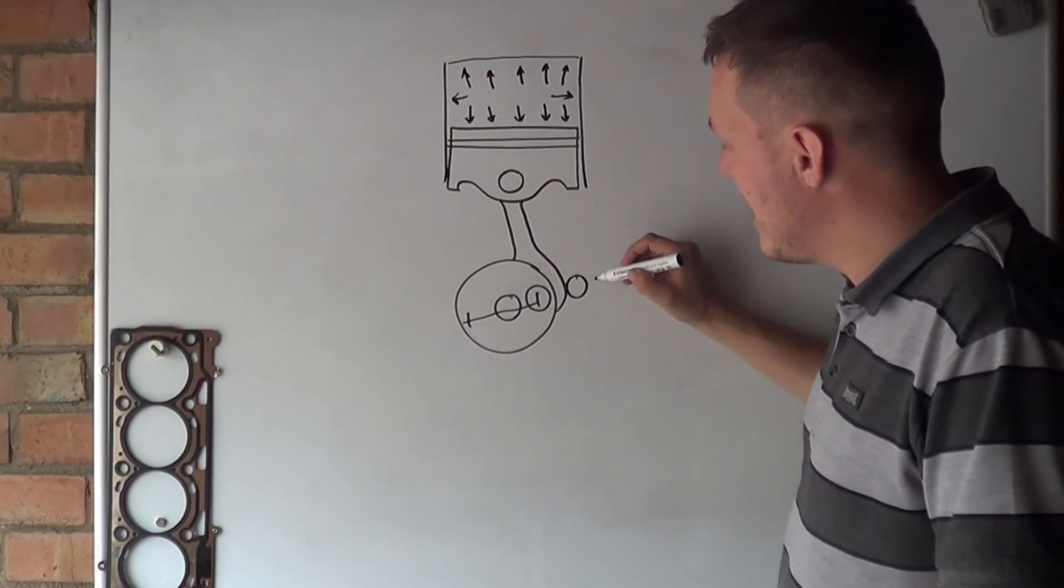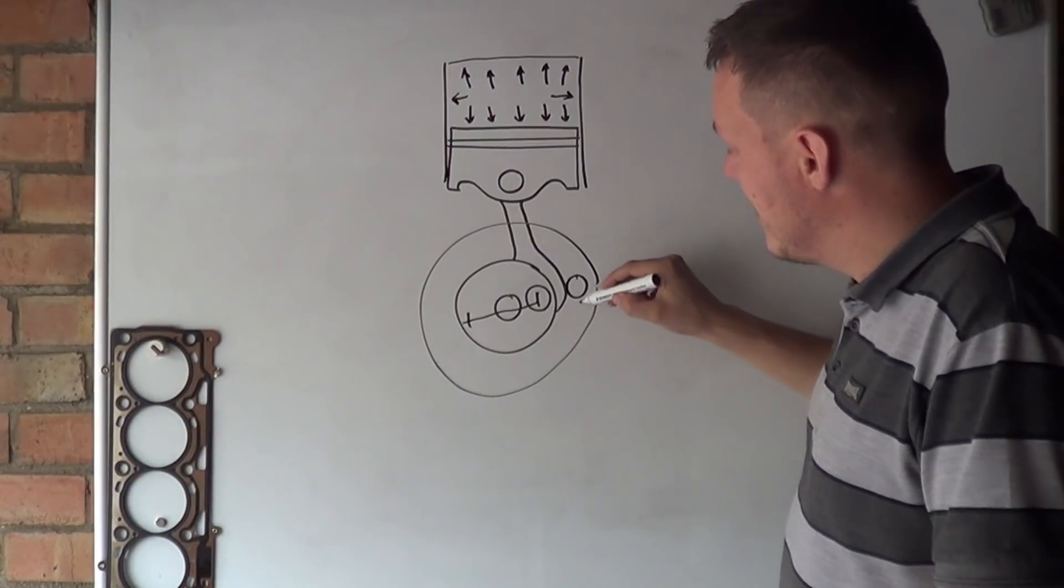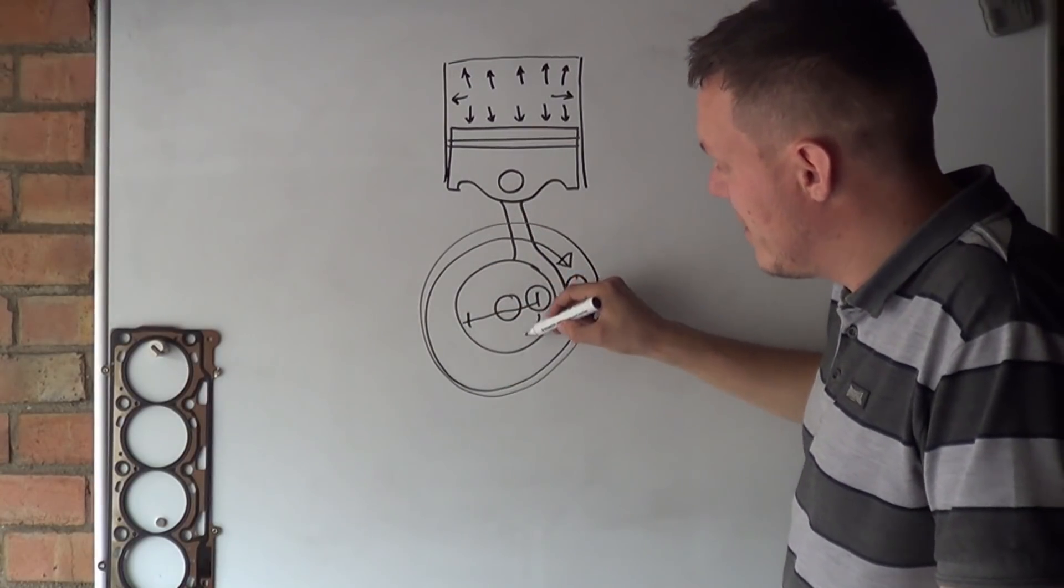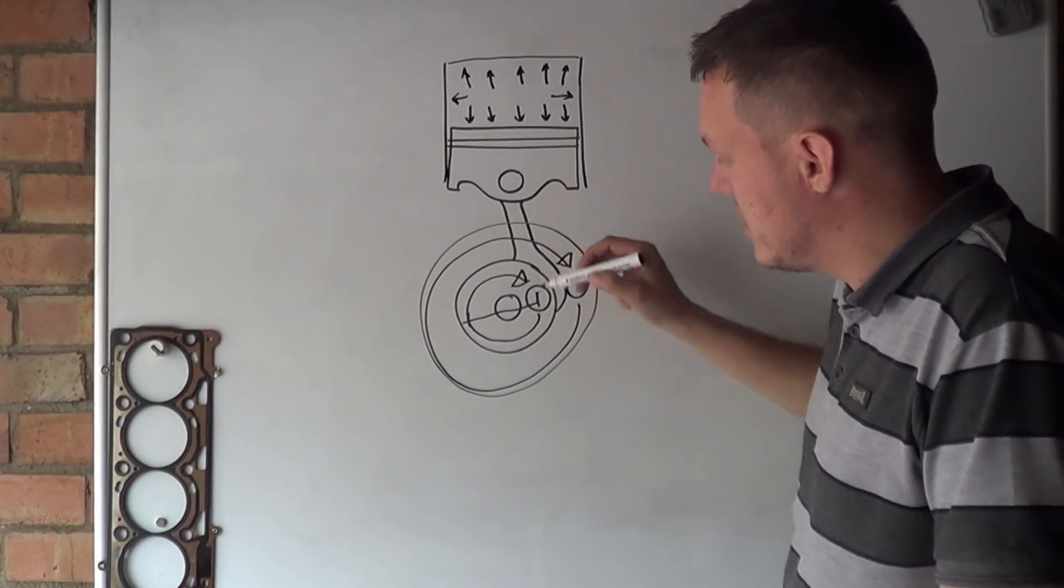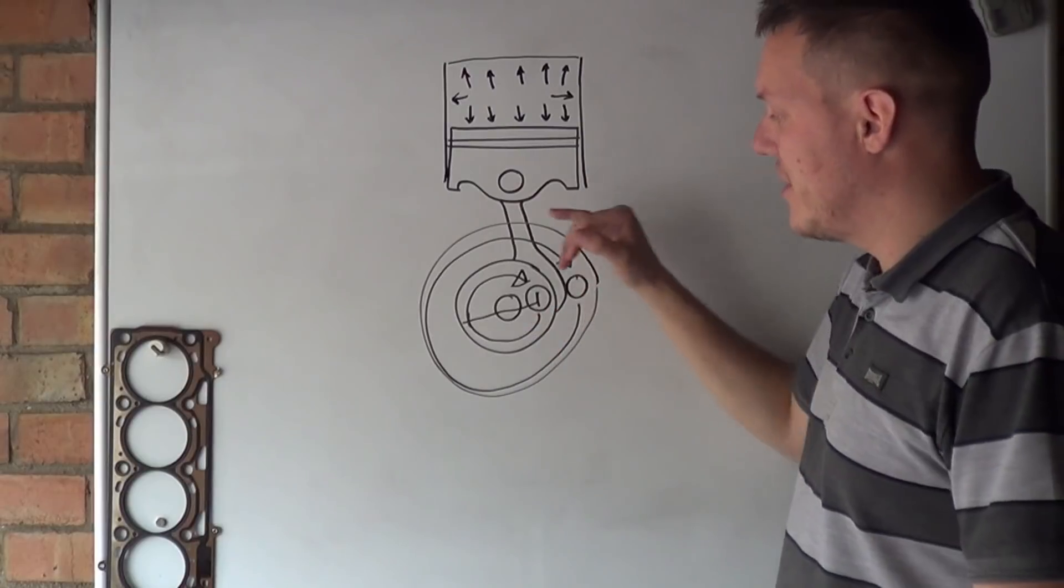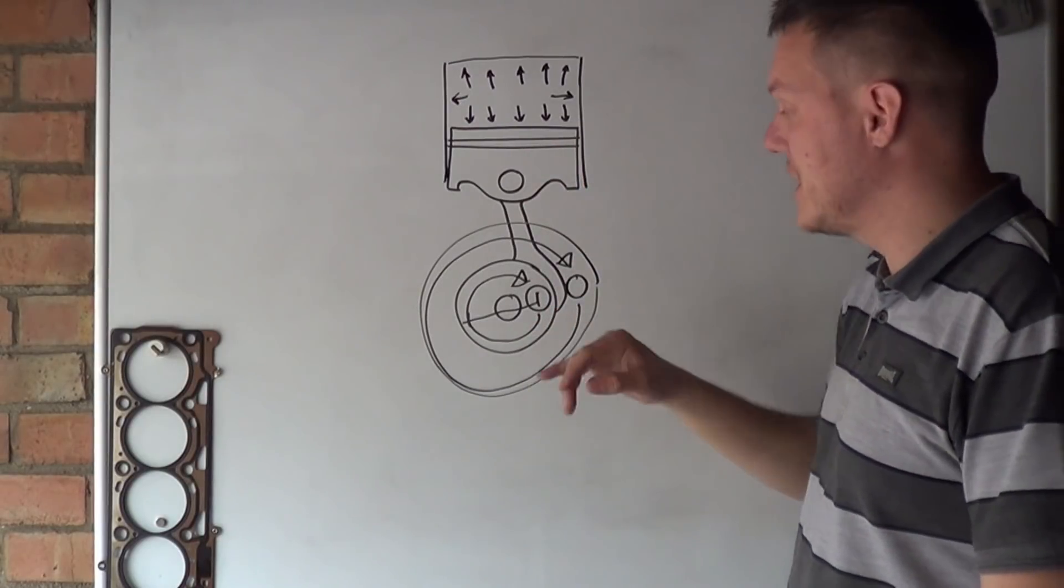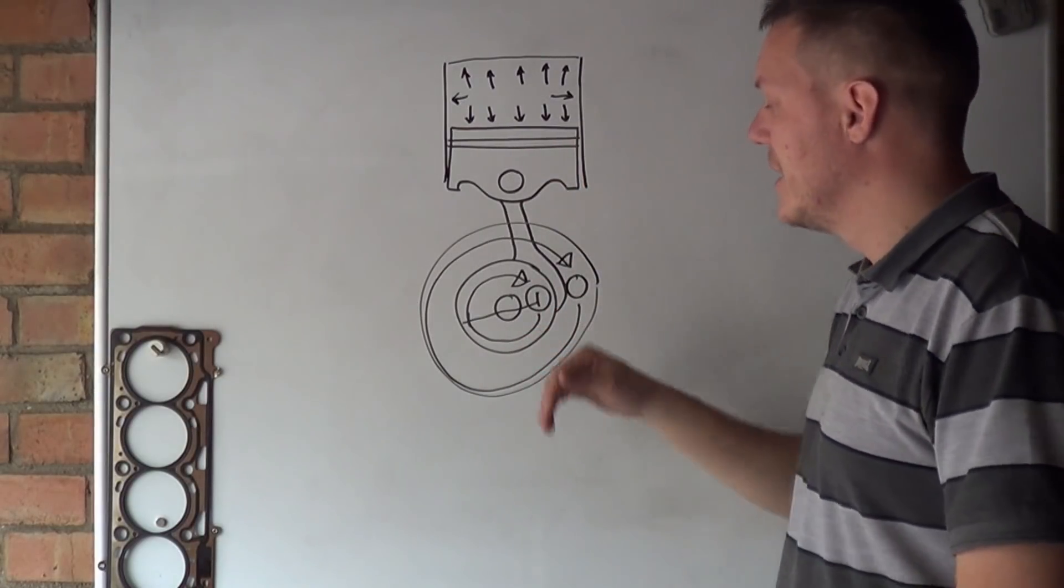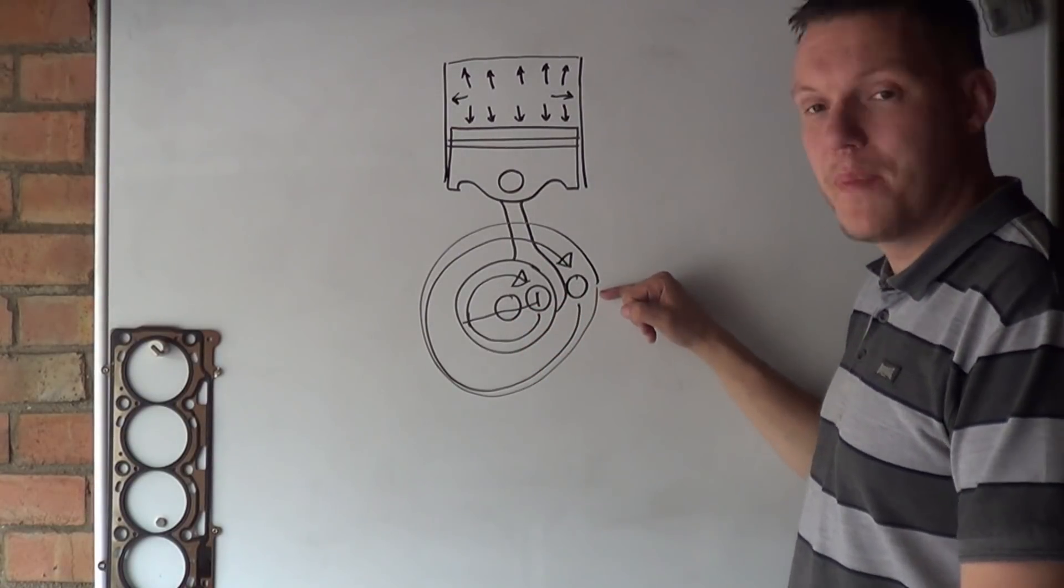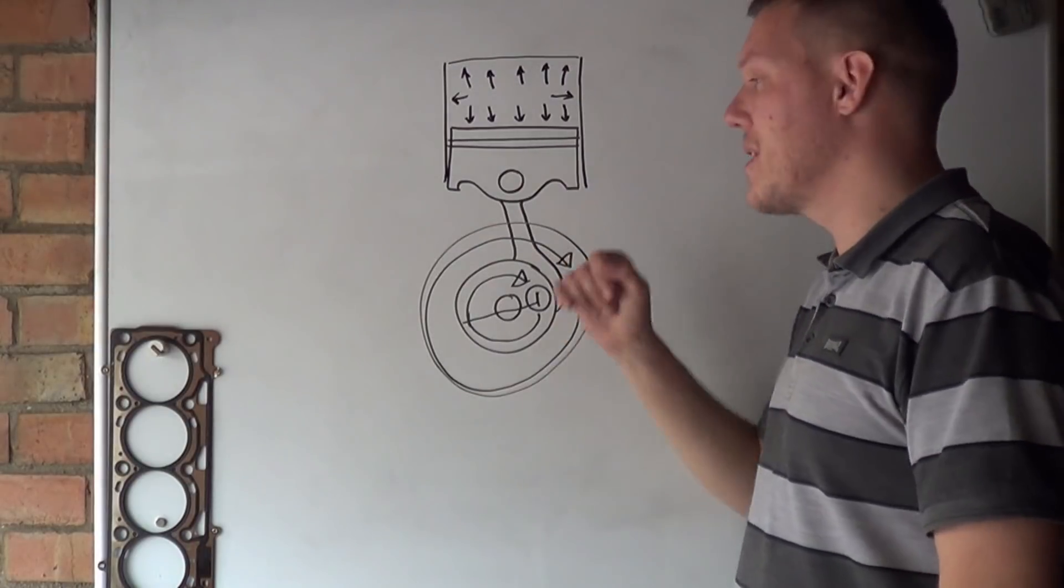The reason why they want to reduce the size of the crank is, if your pin was here, in a bigger crank, this is a longer distance to go all the way around once, than this is to go around once. Which means that the RPM of an engine with a similar size CC, with a smaller crank, can rotate faster, you get higher RPM. If you have a bigger crank, you have slower RPM.